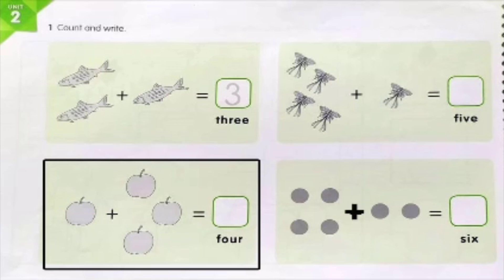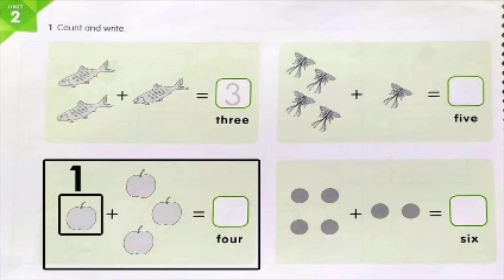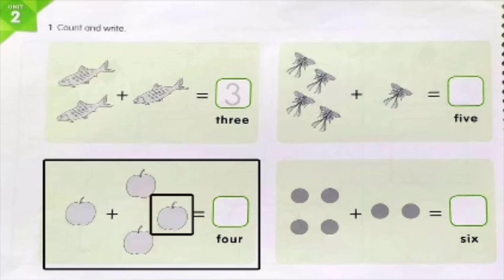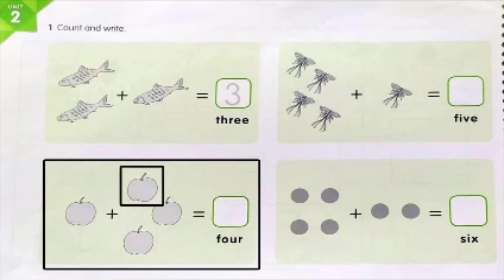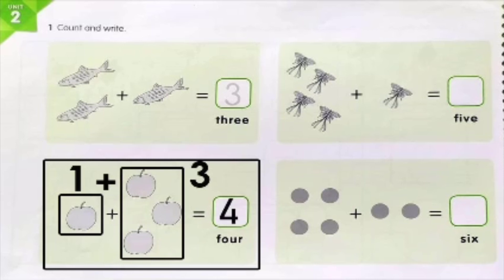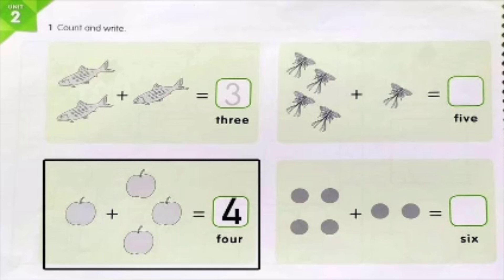In the next picture we can see apples. Let's count how many apples are in the first part: one — there is only one apple. You have to add how many more. Let's count: one, two, three. You have to add one apple and three apples. Let's count how many apples we get: one, two, three, four. Very good, there are four apples. Write number four in the given box.